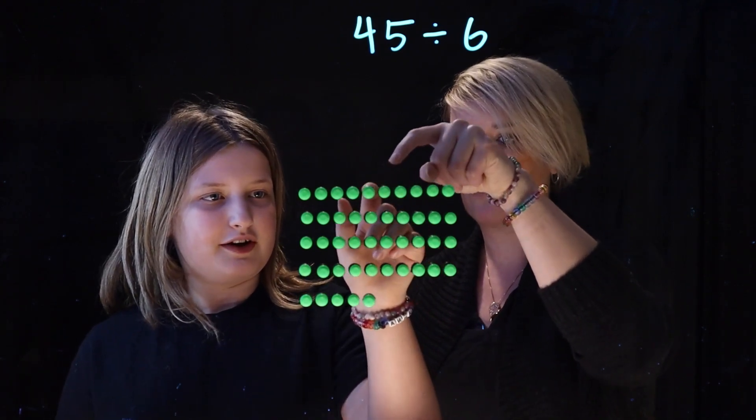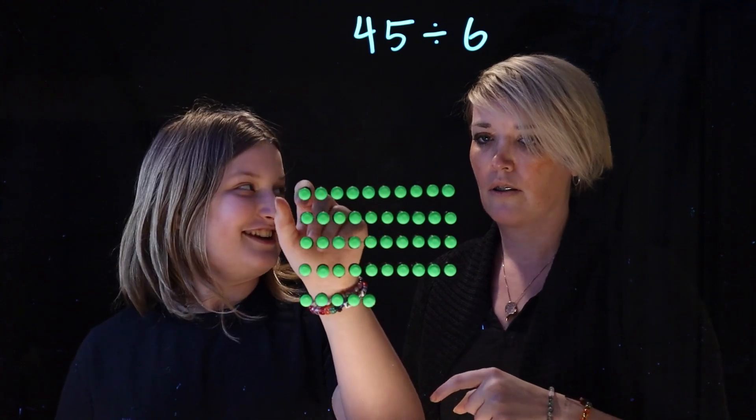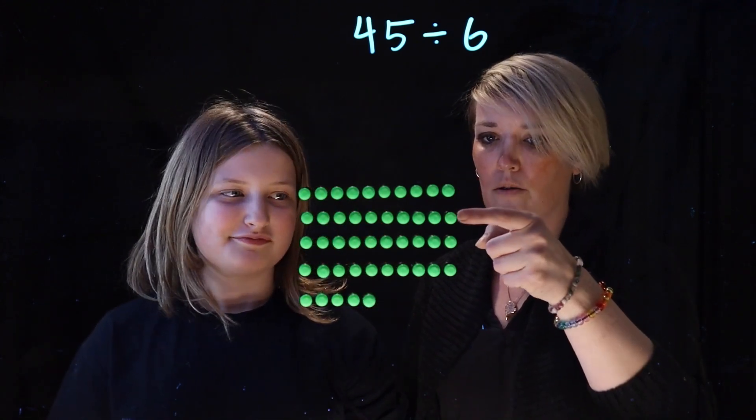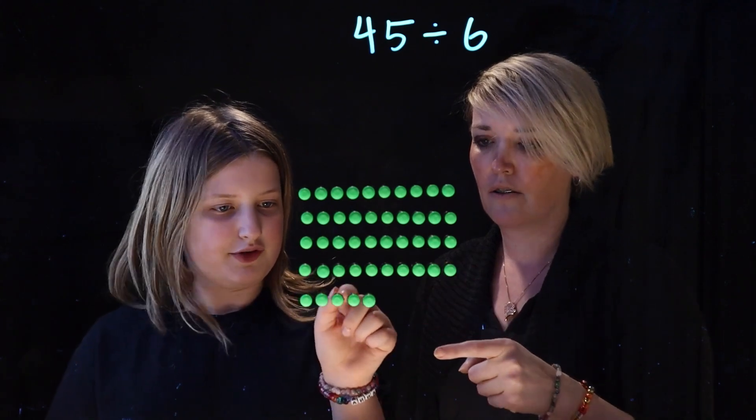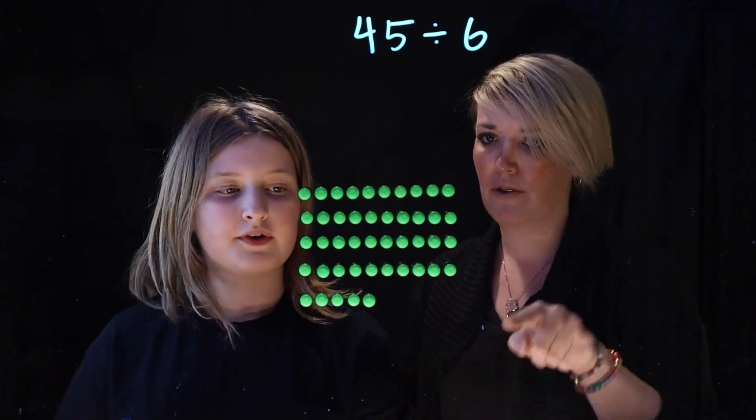1, 2, 3, 4, 5, 6, 7, 8, 9, 10. Okay, and then so 10, 20, 30, 40, and 1, 2, 3, 4, 5, so 45. So we have 45 all together.